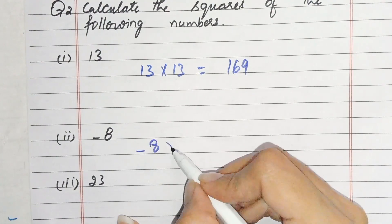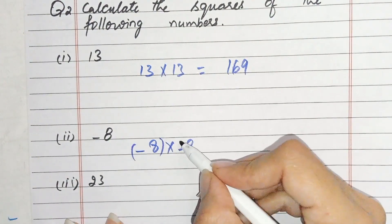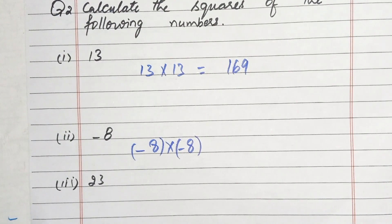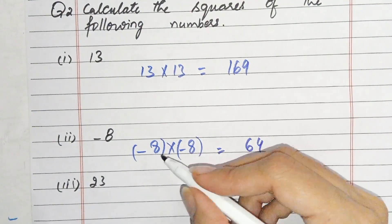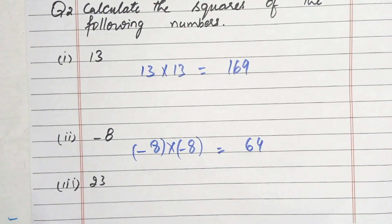Now next we have negative 8, minus 8 times minus 8. Now in a square we have to remember that minus 8 when it multiplies, minus when it multiplies, it's changing to positive sign, it will be plus. 8 times 8 equals 64, negative times negative equals positive, so this is 64.